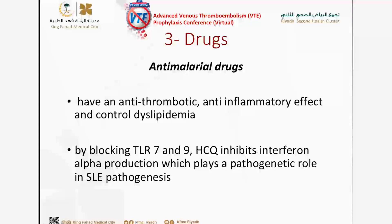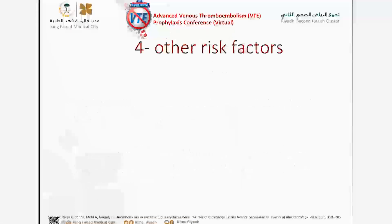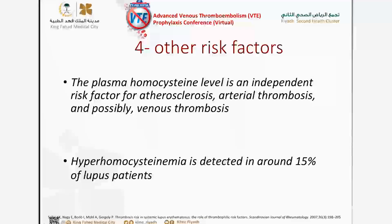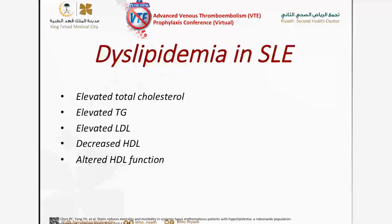This drug acts on toll-like receptors 7 and 9 and also inhibits interferon-alpha production, which plays a major role in the pathogenesis of SLE. There are several other risk factors present in lupus patients, like high levels of homocysteine — hyperhomocysteinemia is detected in around 15% of lupus patients. Dyslipidemia is not uncommon, with elevated triglycerides and LDL and decreased HDL. What is specific to SLE patients is that they have altered HDL function — in addition to low HDL levels, the function of HDL is impaired.